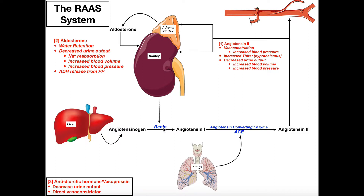The stimulus for renin release is low water volume. As a negative feedback system, we want to raise the water volume so that we can maintain blood pressure. Low blood volume means low blood pressure, and high blood volume means high blood pressure — they're proportional to one another. So if our blood volume drops, we need to use negative feedback to get that blood volume and therefore blood pressure back up. Homeostasis is the key.